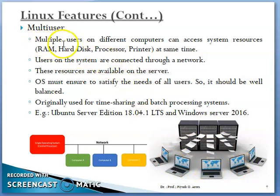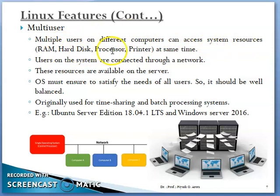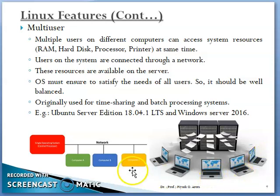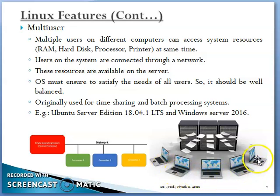Multiple users on different computers can access the system resources — RAM, hard disk, processor, printer — at the same time. For example, agar har ek user ko ek ek printer diya jaye, ek printer ki qeemat hai 10,000 rupees, toh 5 computers ke liye hume 5 printers khariidne padenge — it will cost me 50,000 rupees.